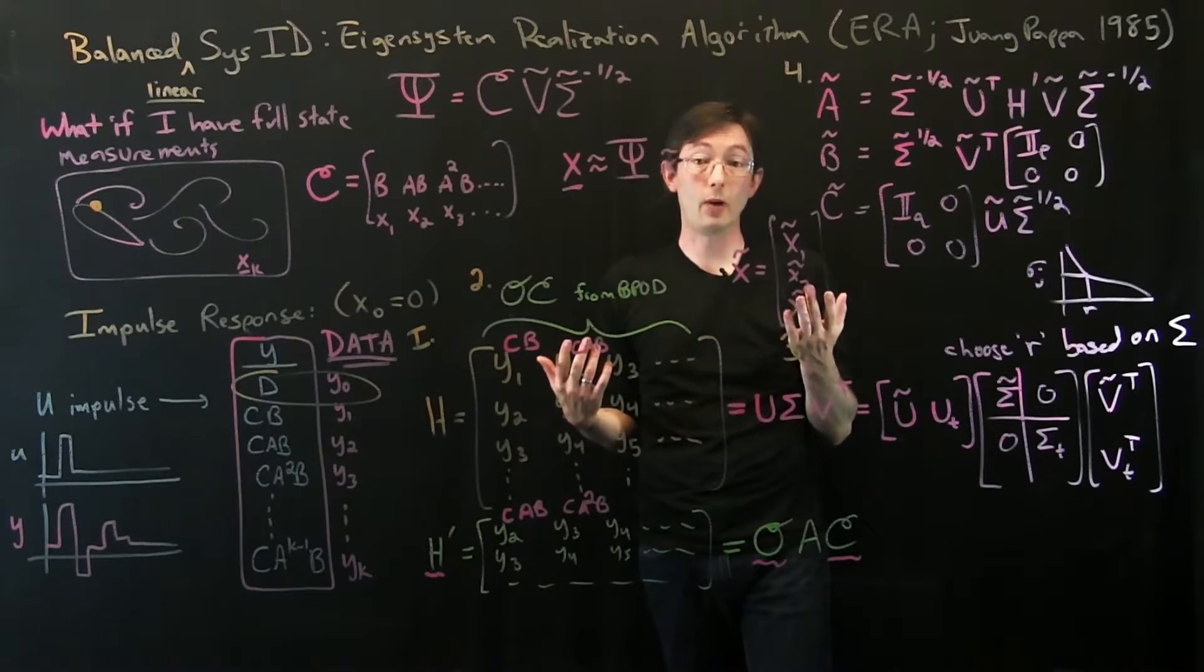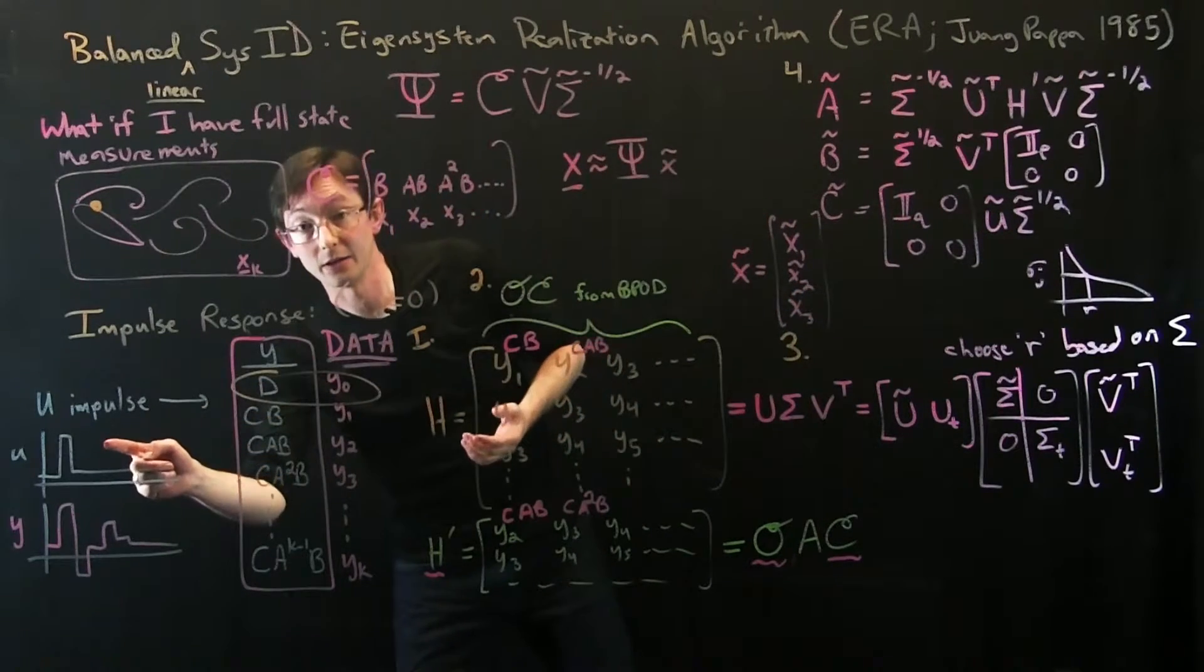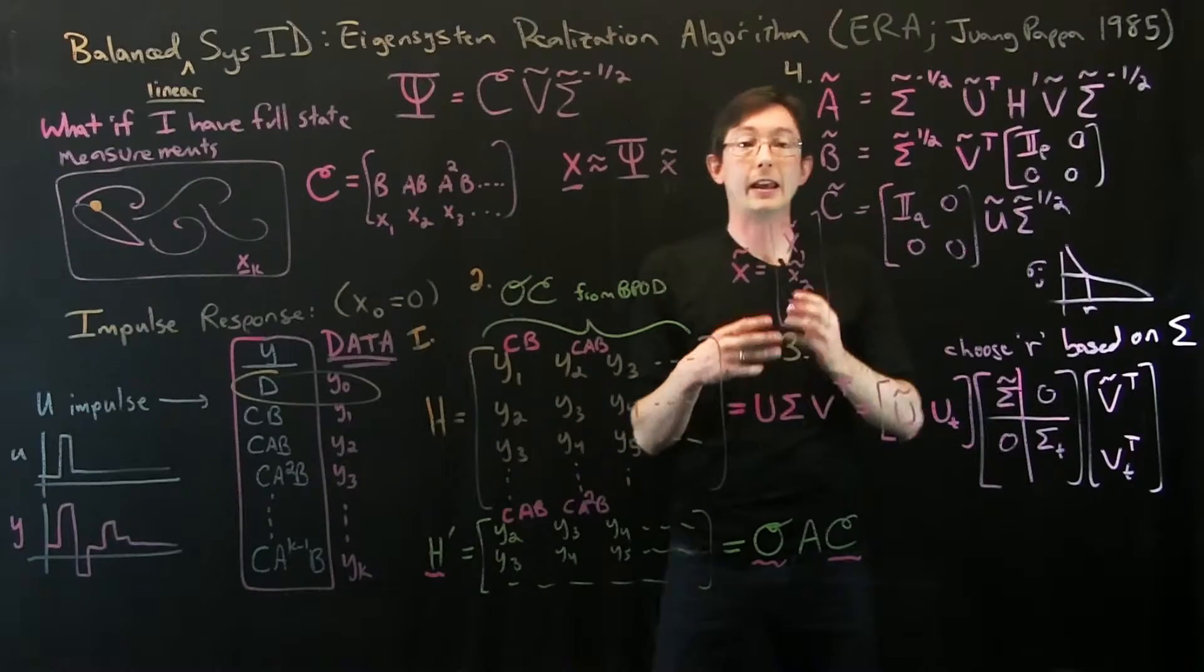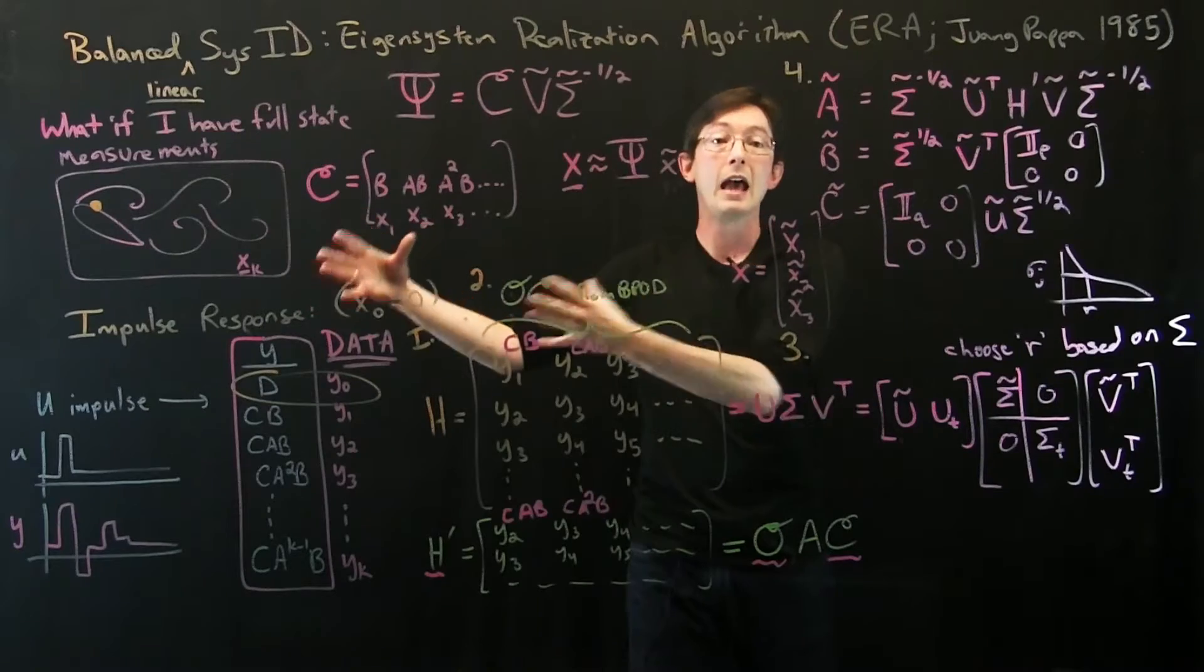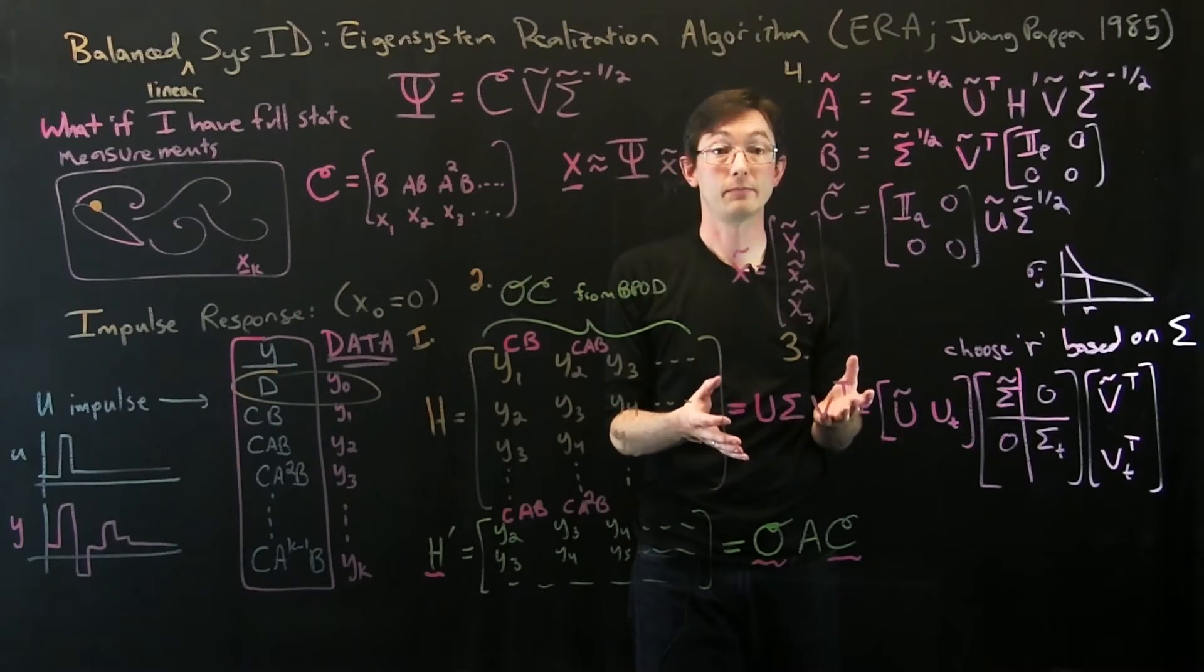Really cool, very useful. Next time we're going to talk about what happens if I can't do a direct impulse response. What if I can't kick the system cleanly and instead I have to give it some pseudo-random forcing? How could I back out the impulse response? Thank you.